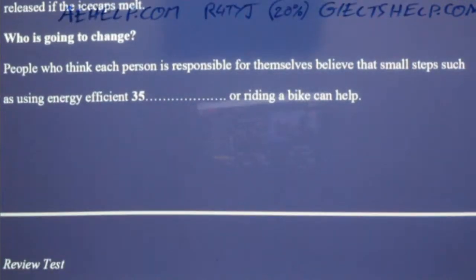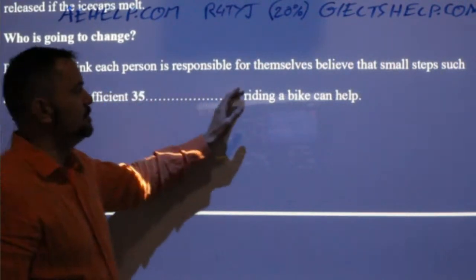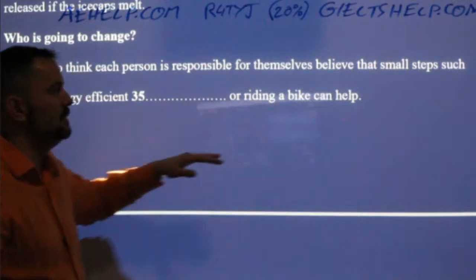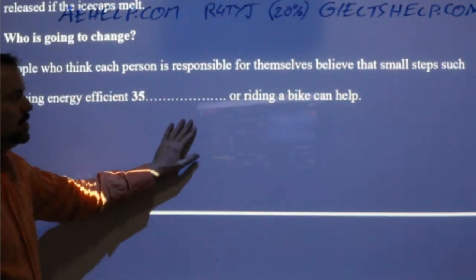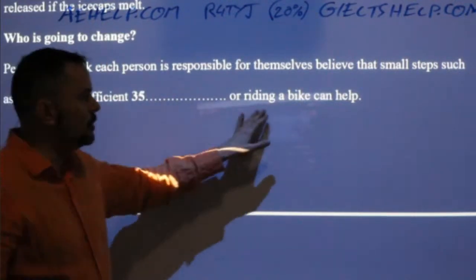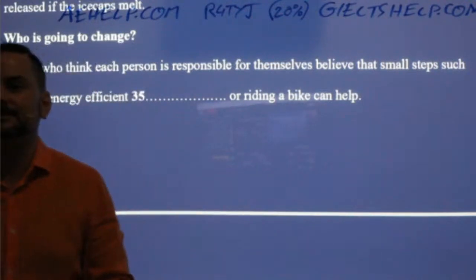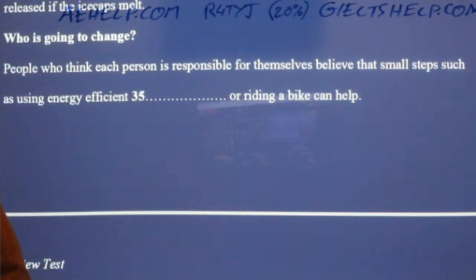Who is going to change? People who think each person is responsible for themselves believe that small steps, such as using energy-efficient light bulbs or riding a bike, can help. Not light boats — light bulbs.